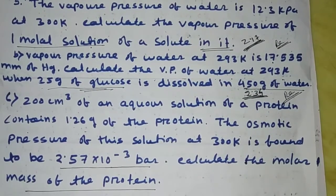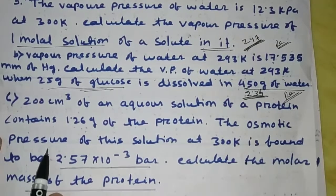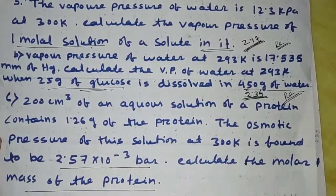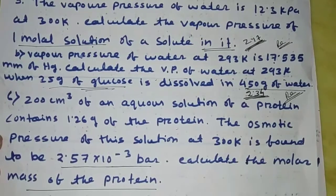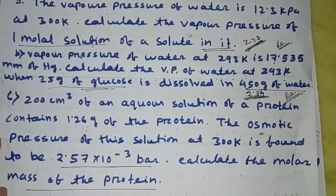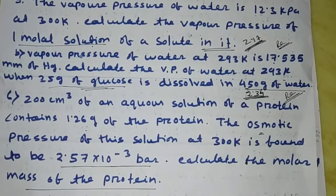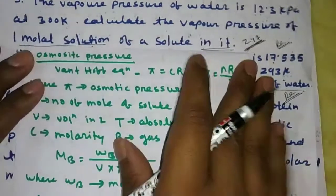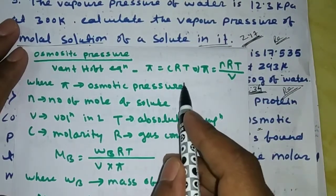This is the osmotic pressure. The osmotic pressure is a colligative property. The number of solute particles depends on the colligative property. So this is the osmotic pressure, and we need to find the molecular mass of the solute. The equation we use is: pi is equal to cRT.